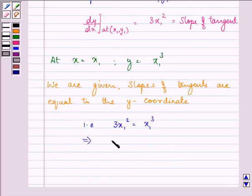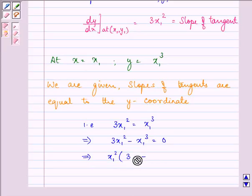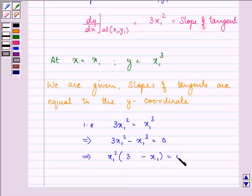That implies 3x₁² - x₁³ = 0. Taking x₁² common, we are left with x₁²(3 - x₁) = 0. So that means either x₁² = 0 or 3 - x₁ = 0.